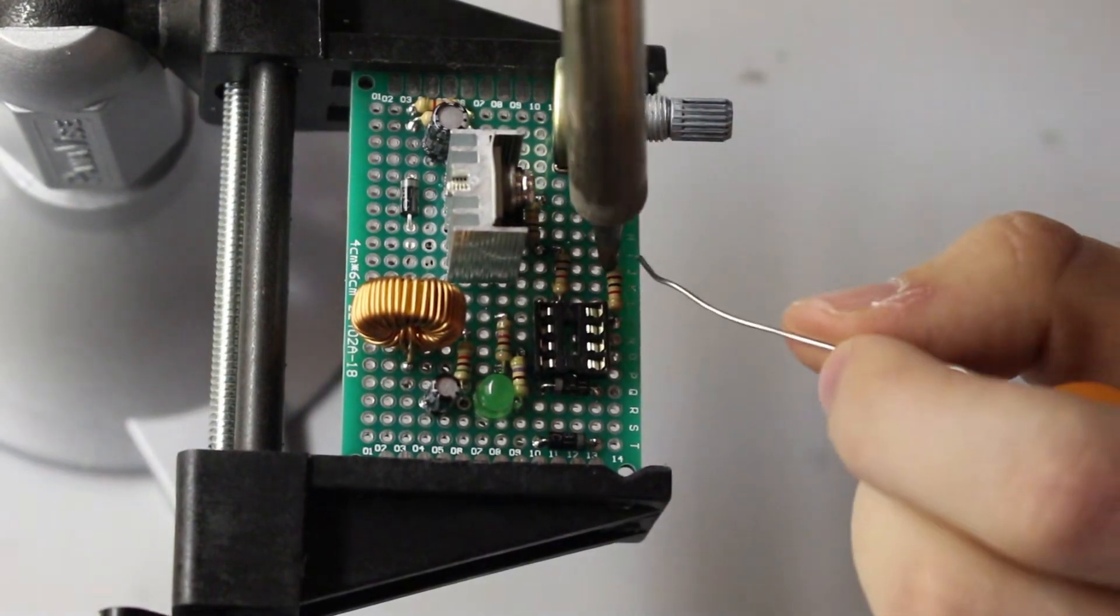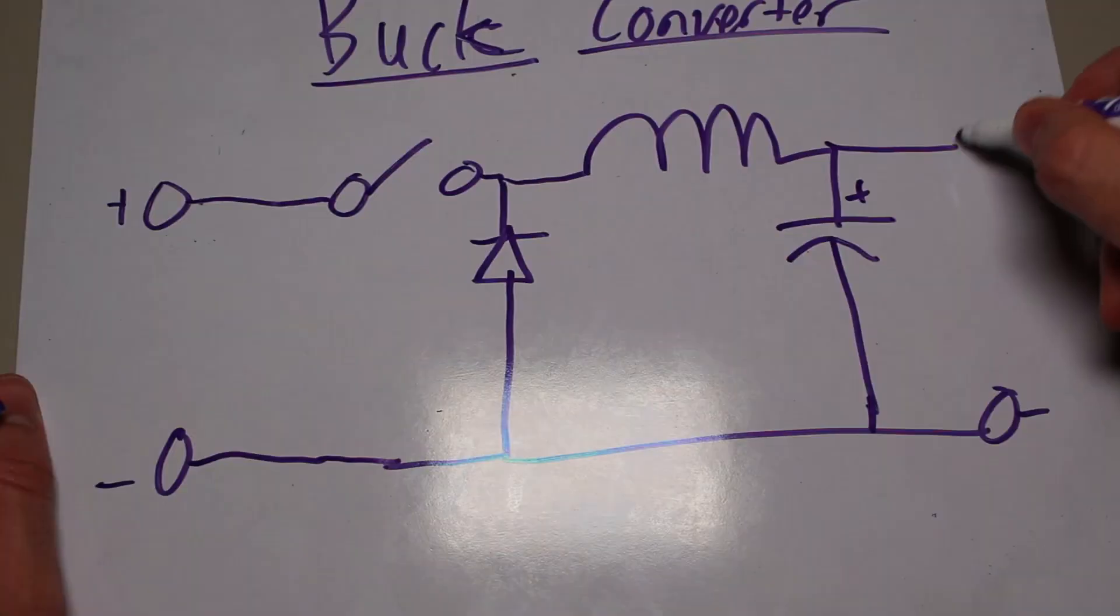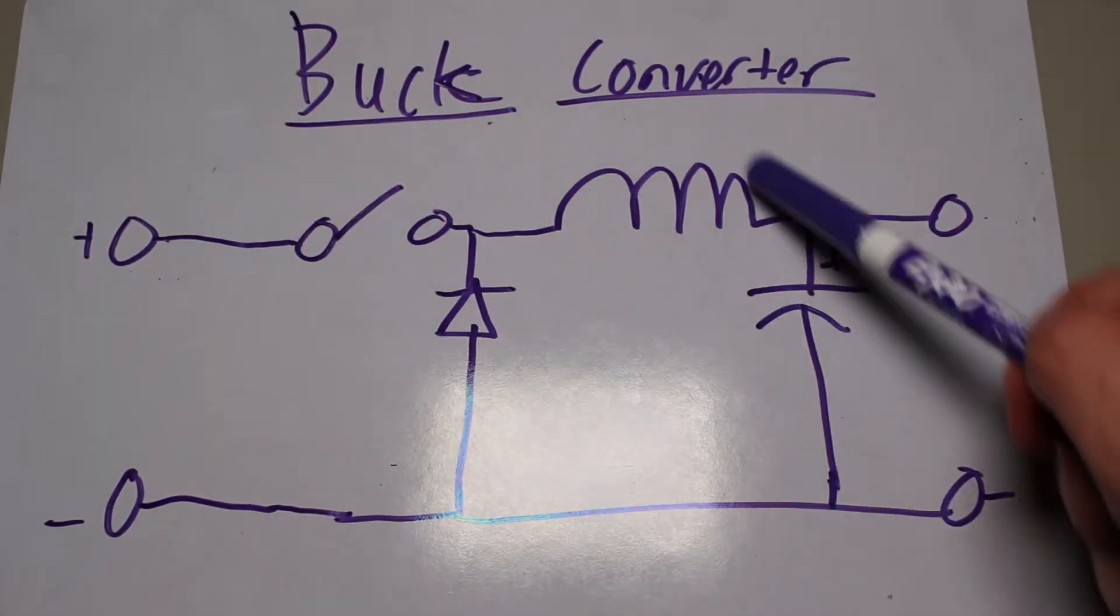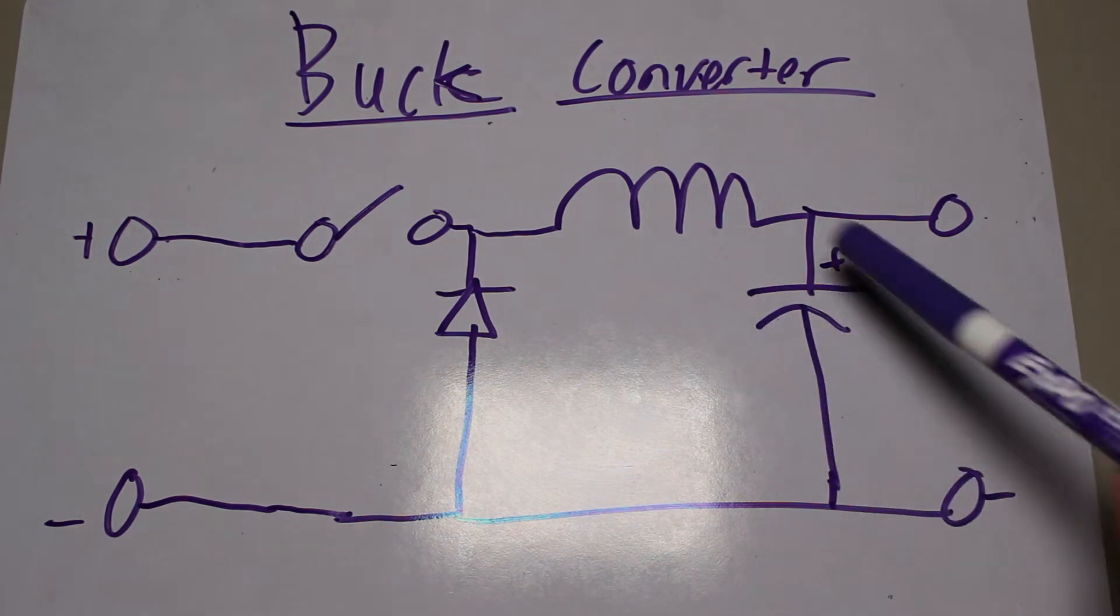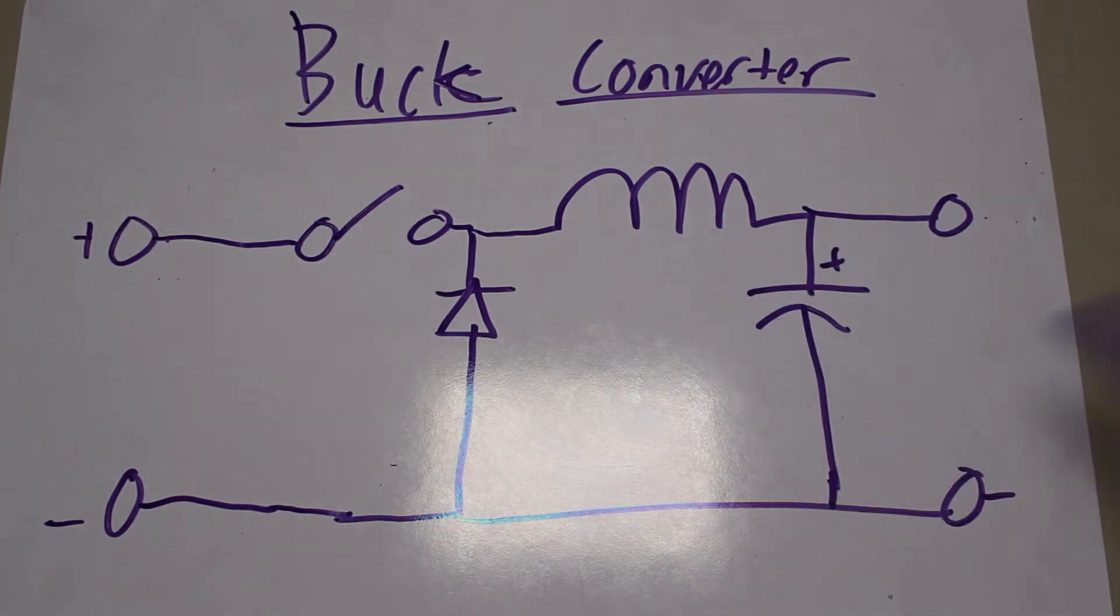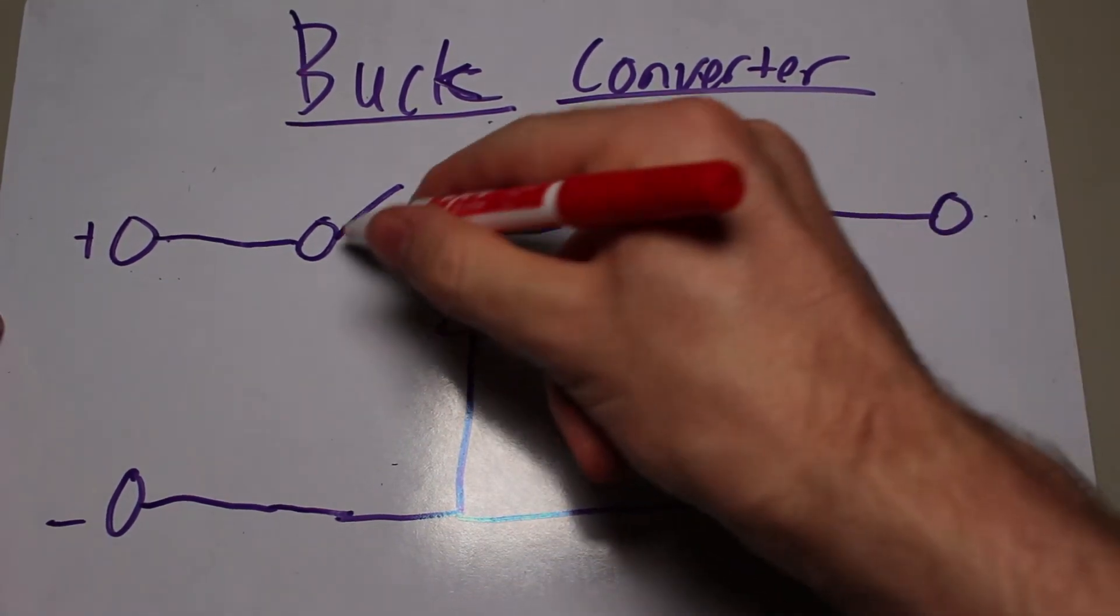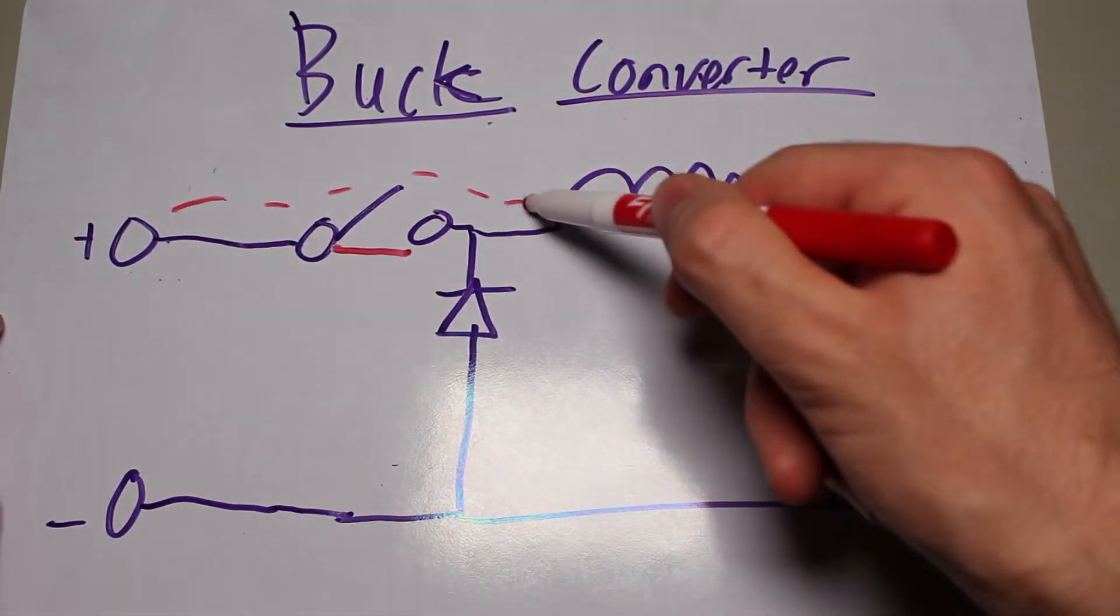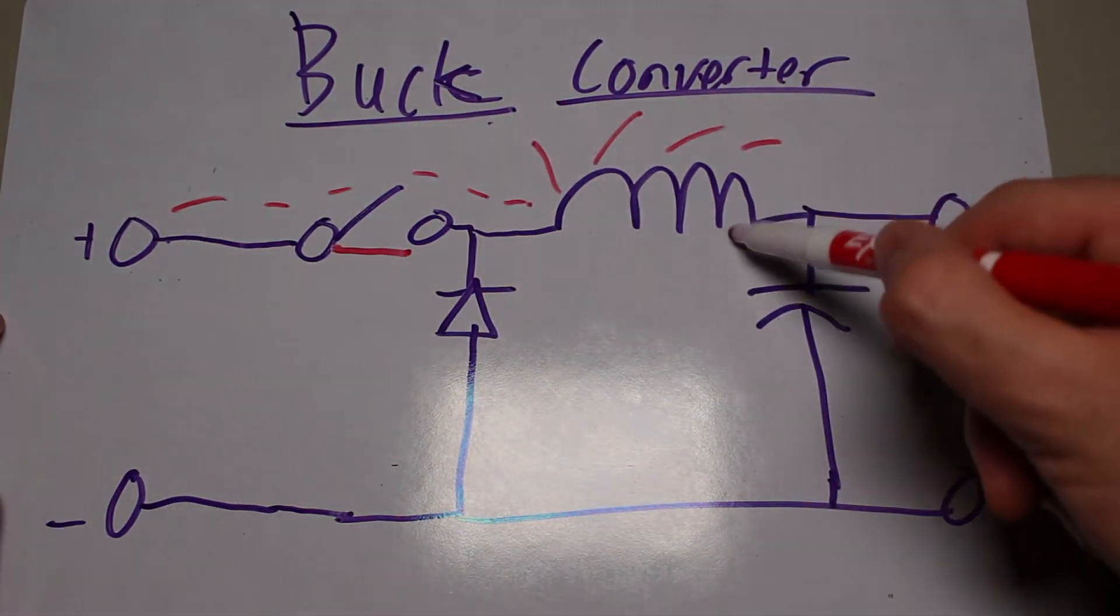Anyways, let's review the basic buck converter circuit. We have a switch, a diode, a coil, and a capacitor. Let's start the explanation with all the components discharged and the switch open. Once we close the switch, the voltage source will start charging the inductor, the capacitor, and the load simultaneously.